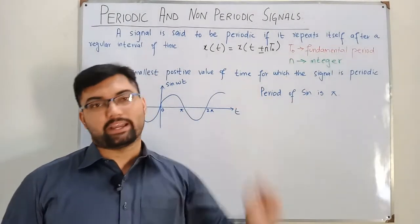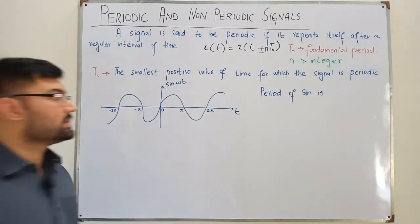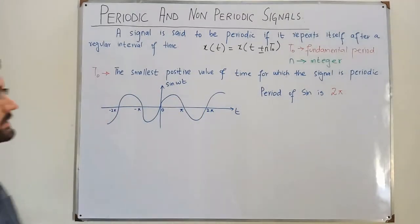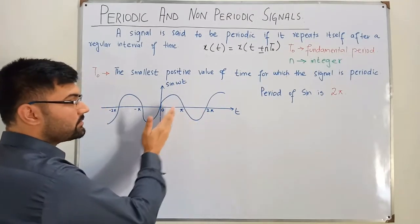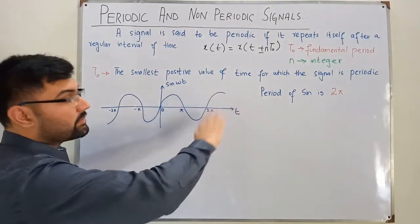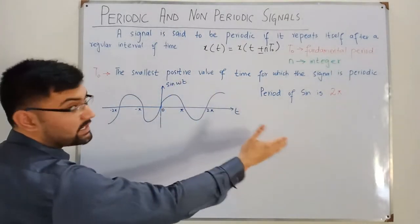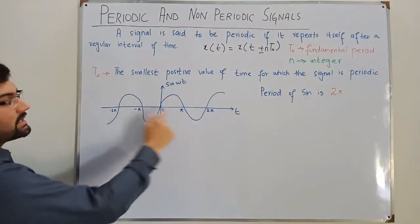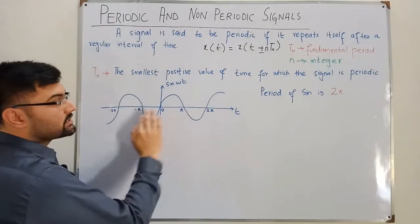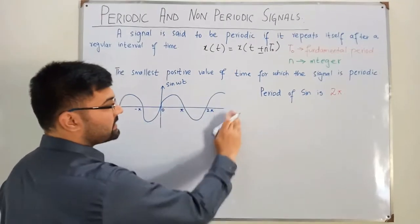So the period of sine is not π. The period of a sine wave is 2π. At 2π the value is also zero, and to the left of zero we have negative values — same as to the left of 2π. To the right of zero we have positive values — same as to the right of 2π. So after 2π the wave has been regenerated.